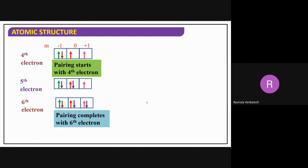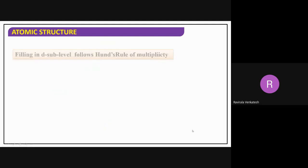Now let us see what happens if we fill incorrectly. Take 2p with 4 electrons. If I fill like this — one, two, three, four all paired in sequence — that is the wrong method. The correct method is: first fill one, two, three singly into each orbital, and then place the fourth electron to begin pairing. After half-filling only must pairing start. This is the principle.